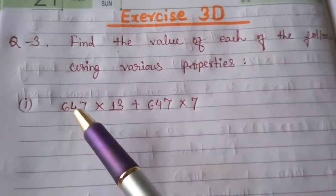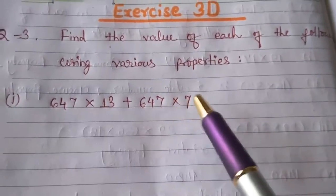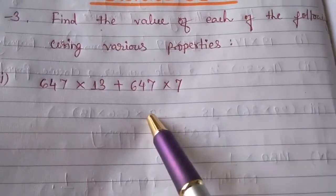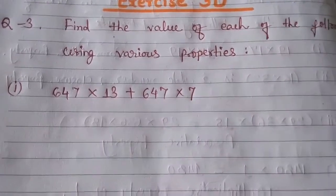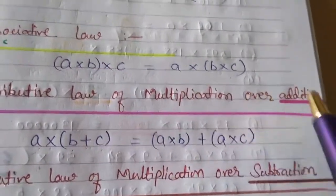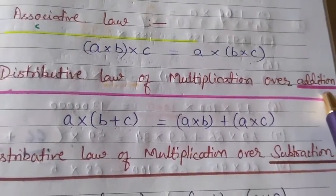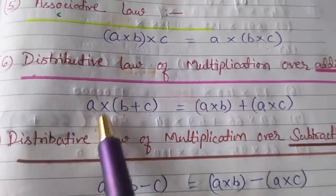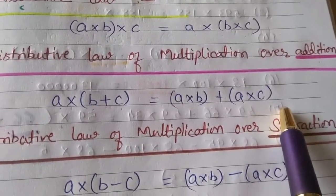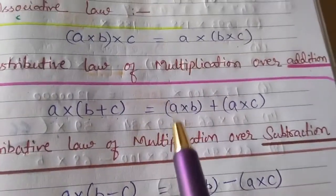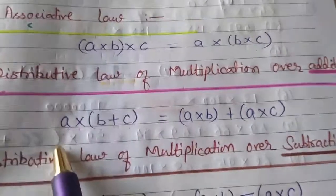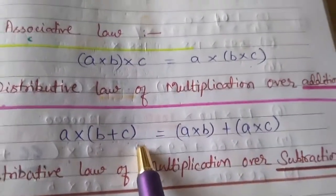The first question is 647 × 13 + 647 × 7. Which property applies here? Let me recap the property for you: Distributive Law of Multiplication over Addition. The rule is: A × B + A × C = A × (B + C). And here, your question is in the form A × B + A × C.